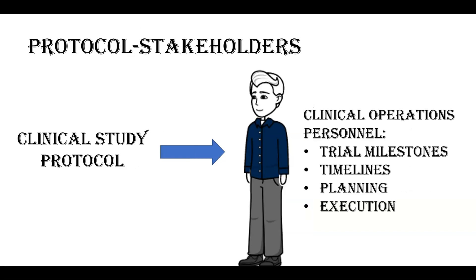The clinical operations personnel are involved with the practical aspects of a clinical trial. Based on the study design, efficacy, and safety endpoints for a clinical trial, the clinical operations personnel define what the trial milestones are, when subjects will be enrolled, when study treatments should be administered, and when and how efficacy should be assessed. They are basically involved in the execution phase of the clinical trial.